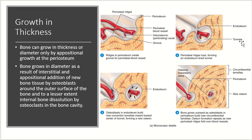Looking at the steps for growth in thickness: first, ridges of the periosteum create a groove for the periosteal blood vessel to reside. Next, that periosteal ridge fuses and forms an endosteum-lined tunnel. The third step is when osteoblasts in the endosteum build new concentric lamellae moving inward toward the center of the tunnel, forming new osteons. And the last step is when the bone grows outward as osteoblasts in the periosteum build new circumferential lamellae. Osteon formation repeats as new periosteal ridges fold over a new blood vessel, so the whole cycle repeats itself.